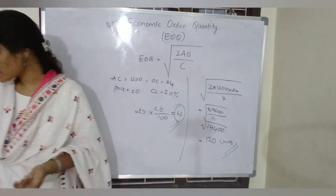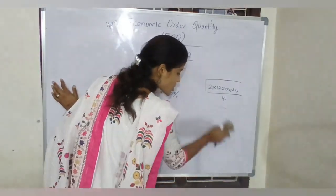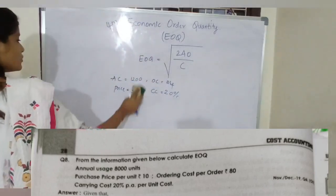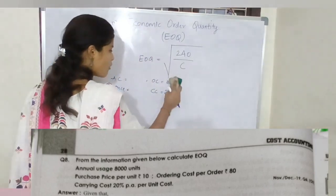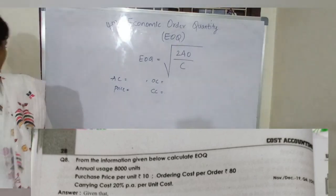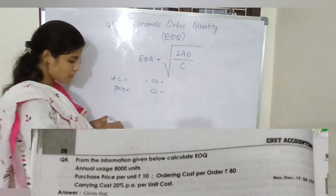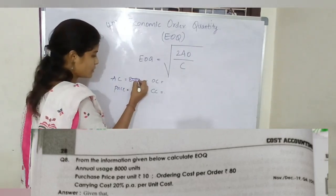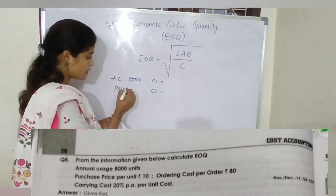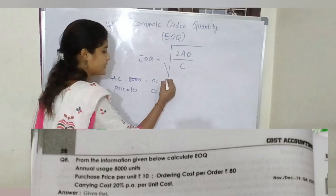Now I will explain the next question as well. Whatever question you are seeing on the screen, make a note of it. In the second question: annual consumption is 8000 units, purchase price per unit is 10, carrying cost is 20 percent, and ordering cost is 80.